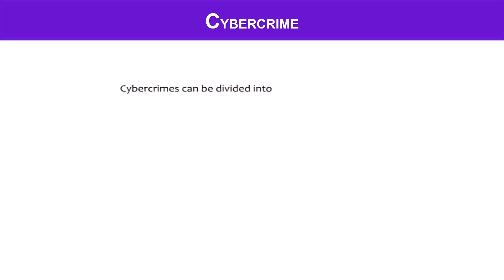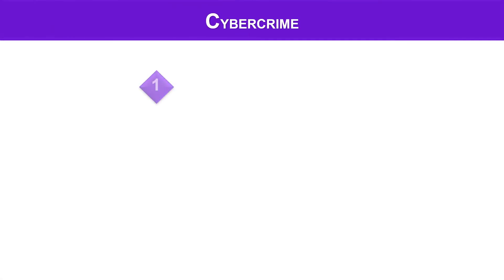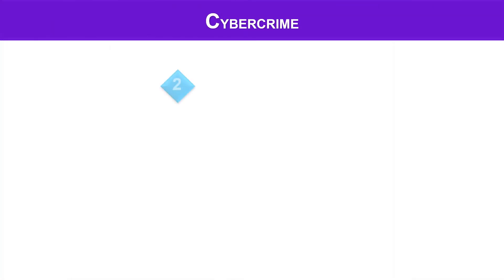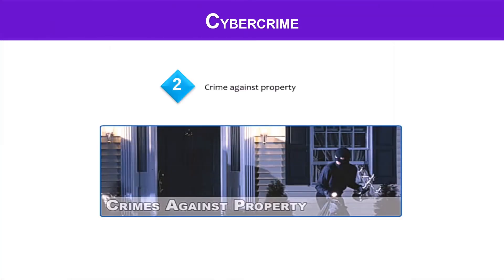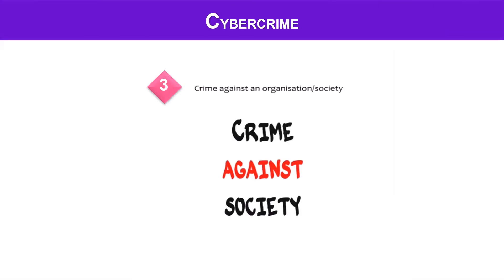Cybercrime can be divided into three main categories. One is crime against an individual. Two, crime against property. And three, crime against an organization or society.